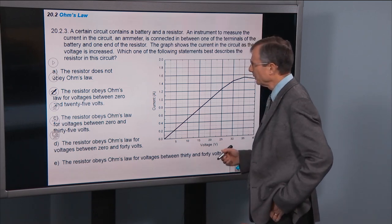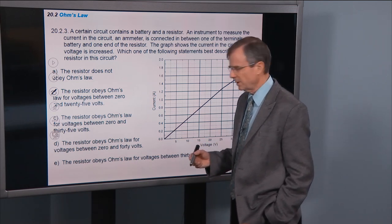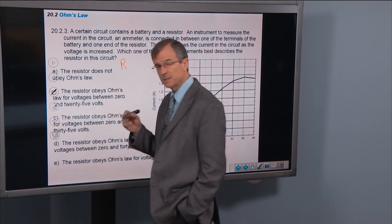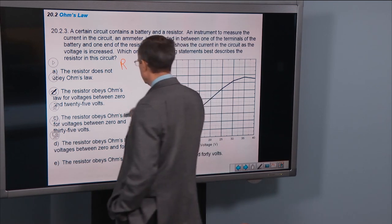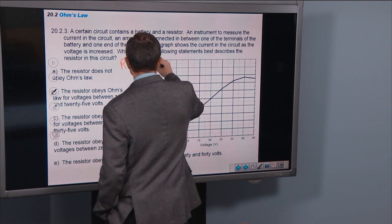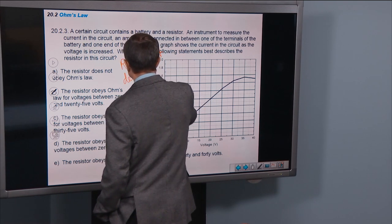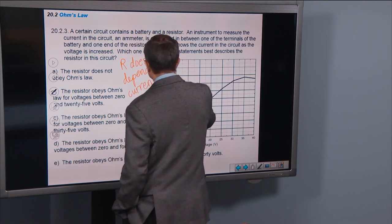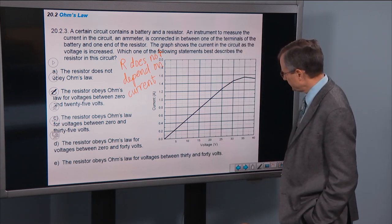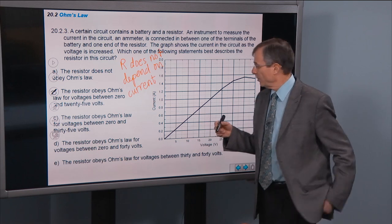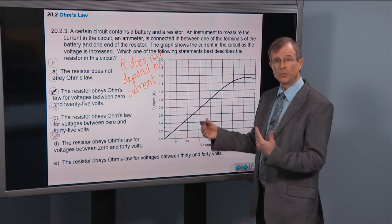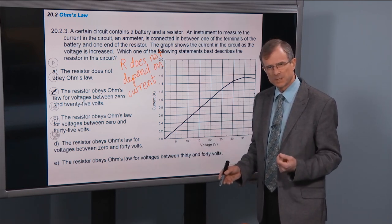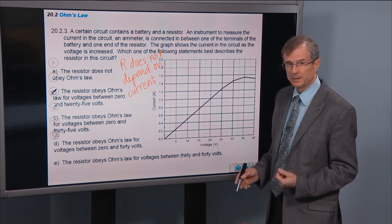Alright, so now we're going to talk a little bit more about Ohm's law. Ohm's law applies when the resistor does not depend, the resistance does not depend on the current. Alright, let's look at this diagram here. We're going to ask where along this graph, for what values of the voltage and the current does the resistance not depend on the current.